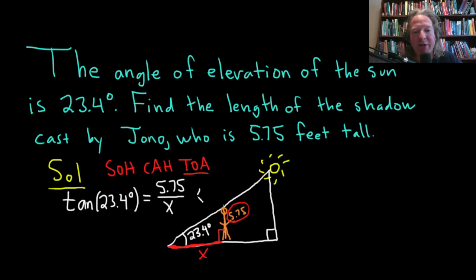We can multiply both sides by X. These cancel, so we have X tangent of 23.4 degrees, and that's equal to 5.75.